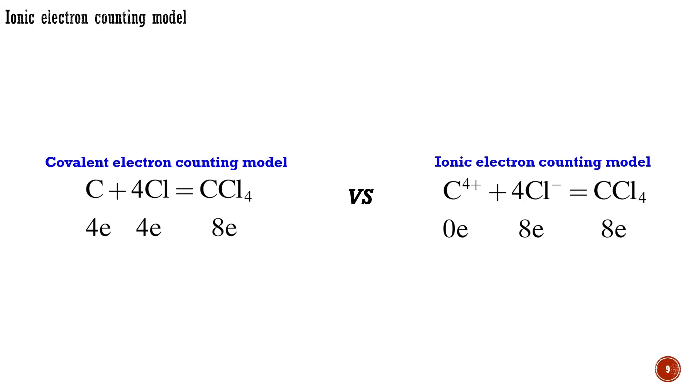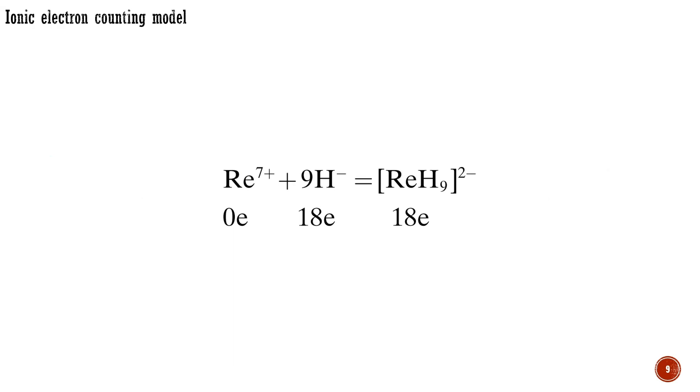Neutral L-type ligands pose no problem because they are always 2-electron donors on either model, but X-type ligands are treated differently. In the ionic model, each metal-X bond is considered as arising from metal-plus and X-minus ions. To return to our organic example, whether we count the octet in tetrachloromethane by the covalent model from the atoms or the ionic model from the ions, we get the same result. Applying the ionic model to the case of potassium nonahydridorhenate gives a result similar to that seen in the covalent electron counting model.